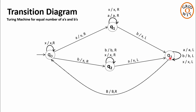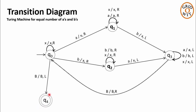Here you can clearly see that through these transitions, we are replacing a pair of AB with X. Now if this string has equal number of As and Bs, then at the end all the symbols will be converted to X. So at the end, q0 while skipping all the Xs will encounter the blank symbol instead of A or B. So q0 on reading the blank symbol will change its state to final state q4 and move towards the left.